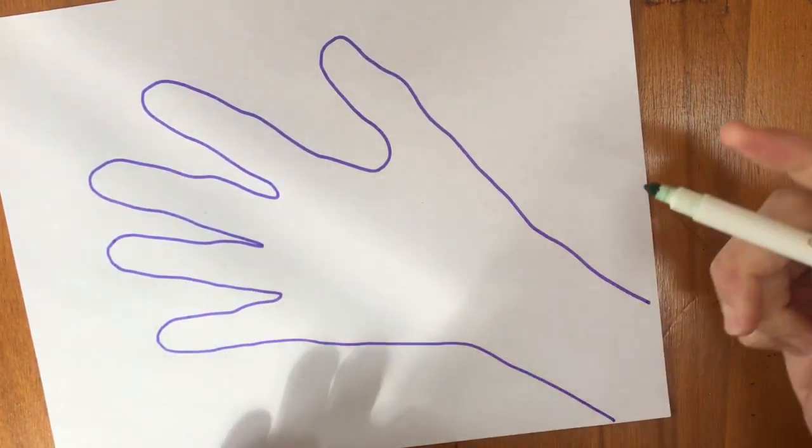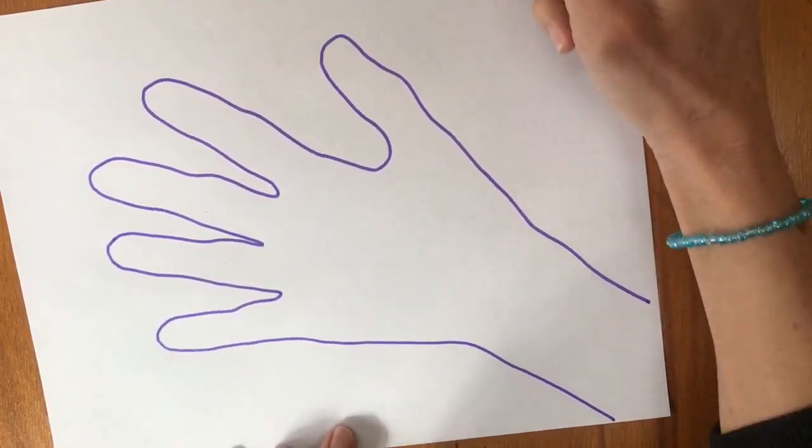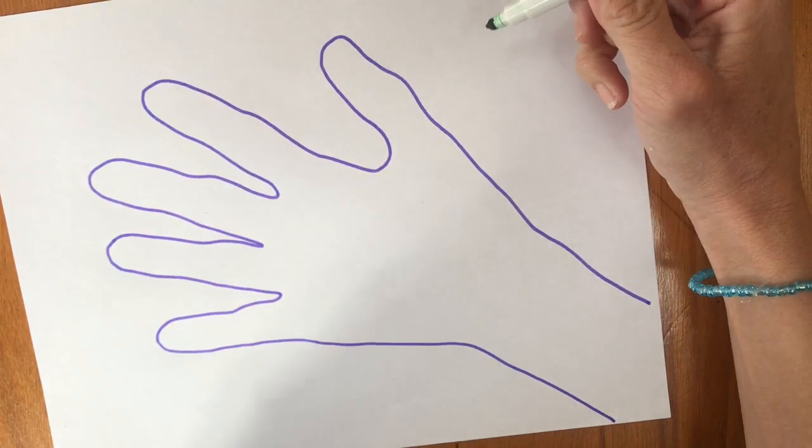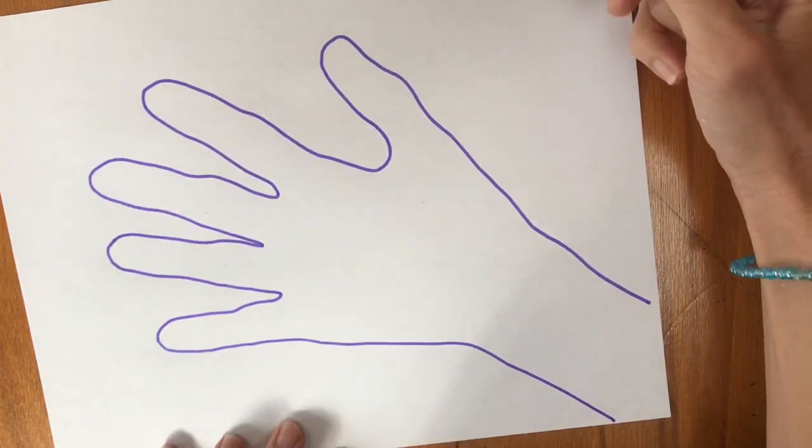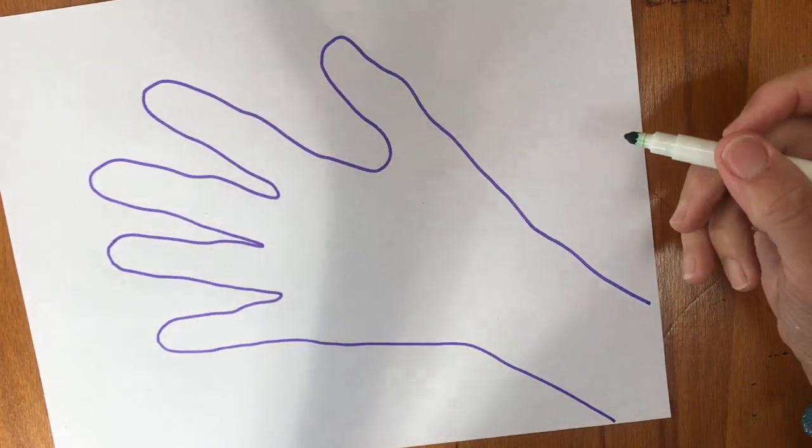Now I'm going to make some straight lines that go behind my hand. I'm not going to make any lines on my hand to start with. Your straight lines can be vertical, horizontal, diagonal, however you want. I'm going to make them diagonal this time.